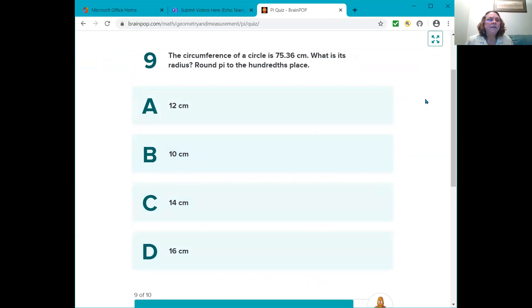Question nine. The circumference of a circle is 75.36 centimeters. What is its radius? Round Pi to the hundredths place. Is it 12, 10, 14, or 16 centimeters? And the answer is 12.